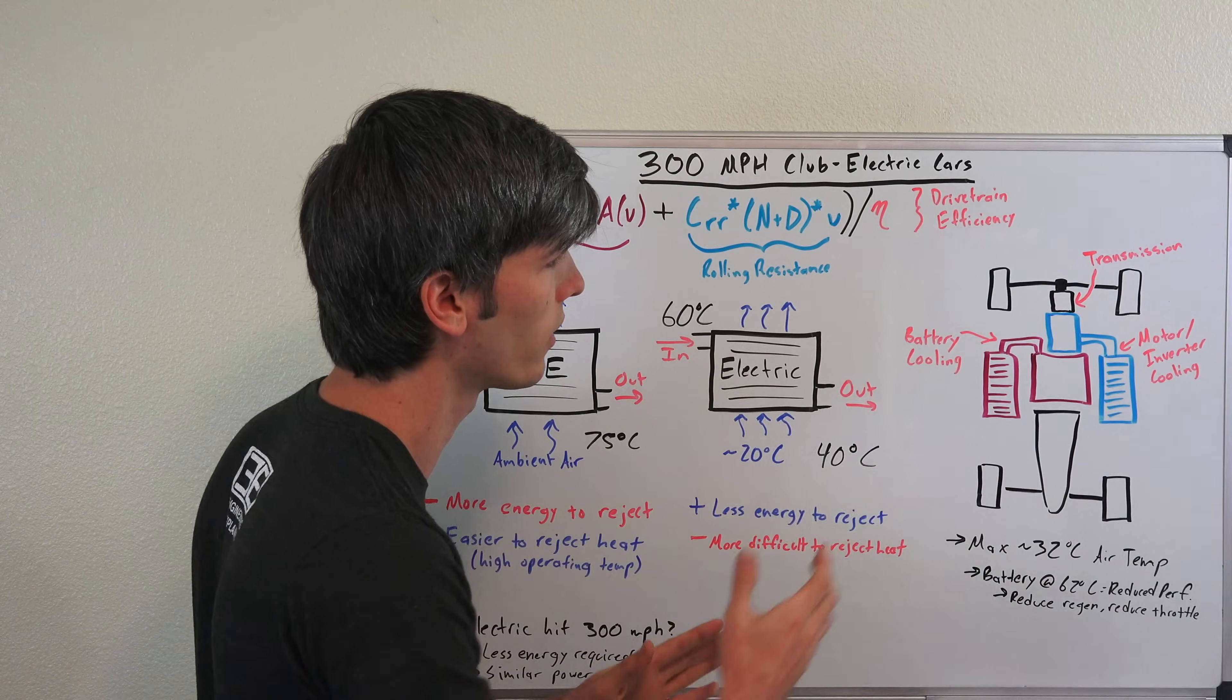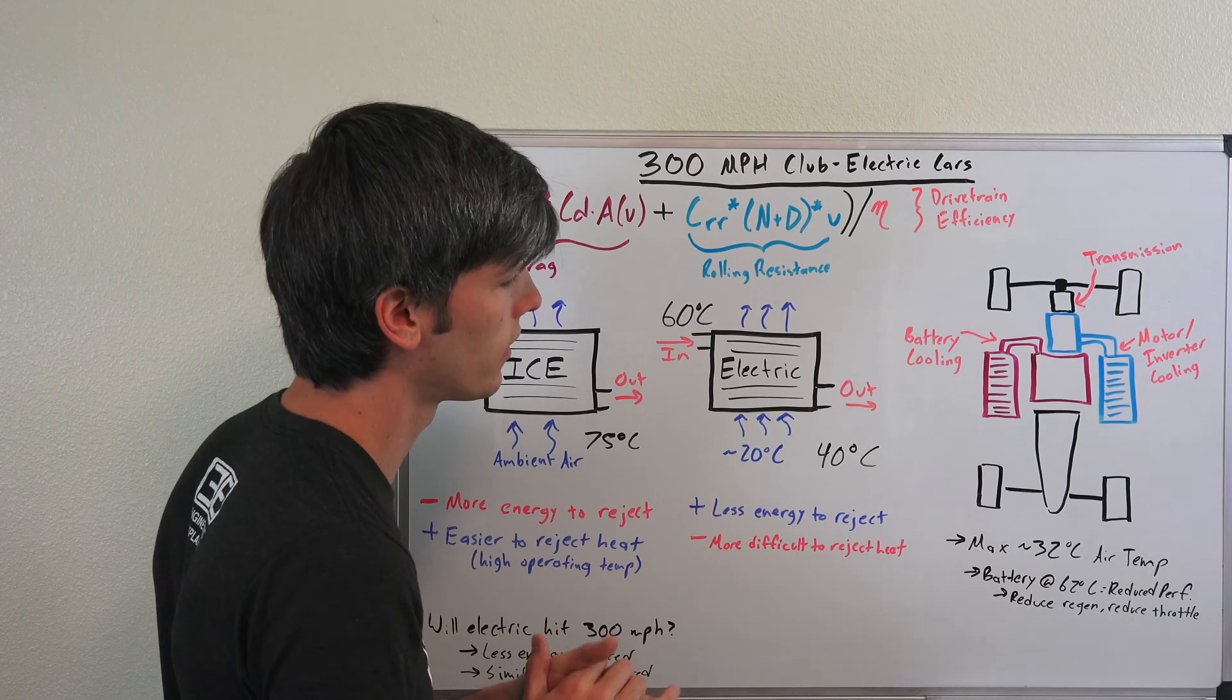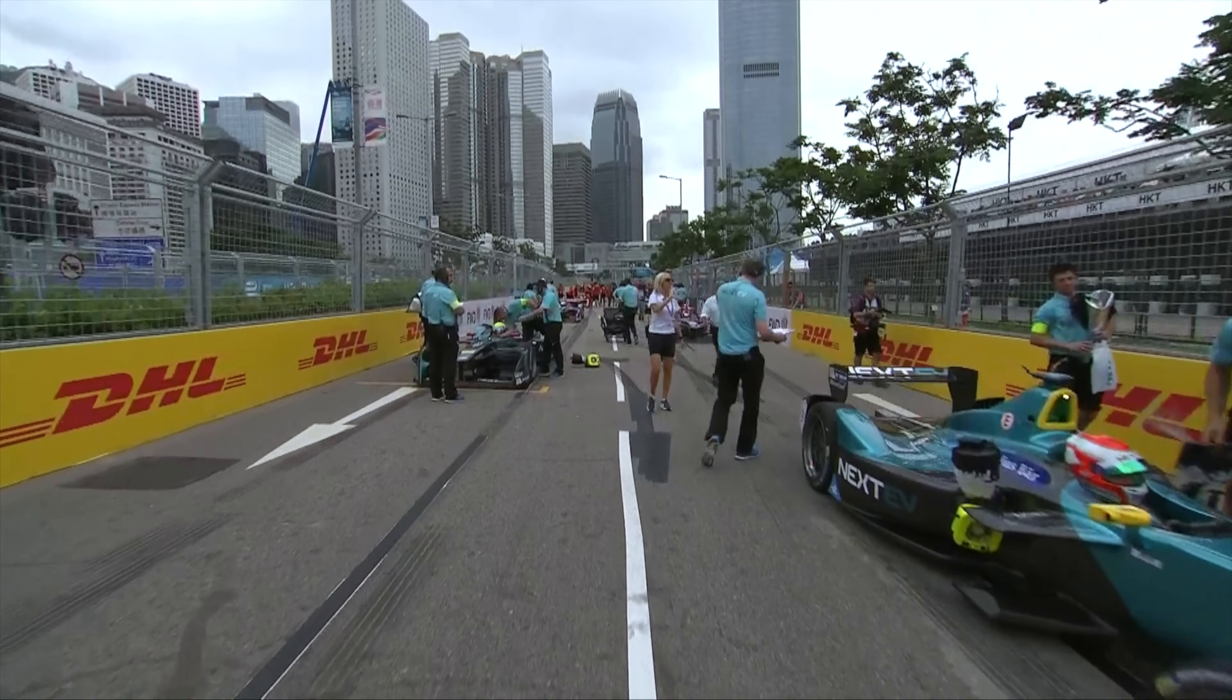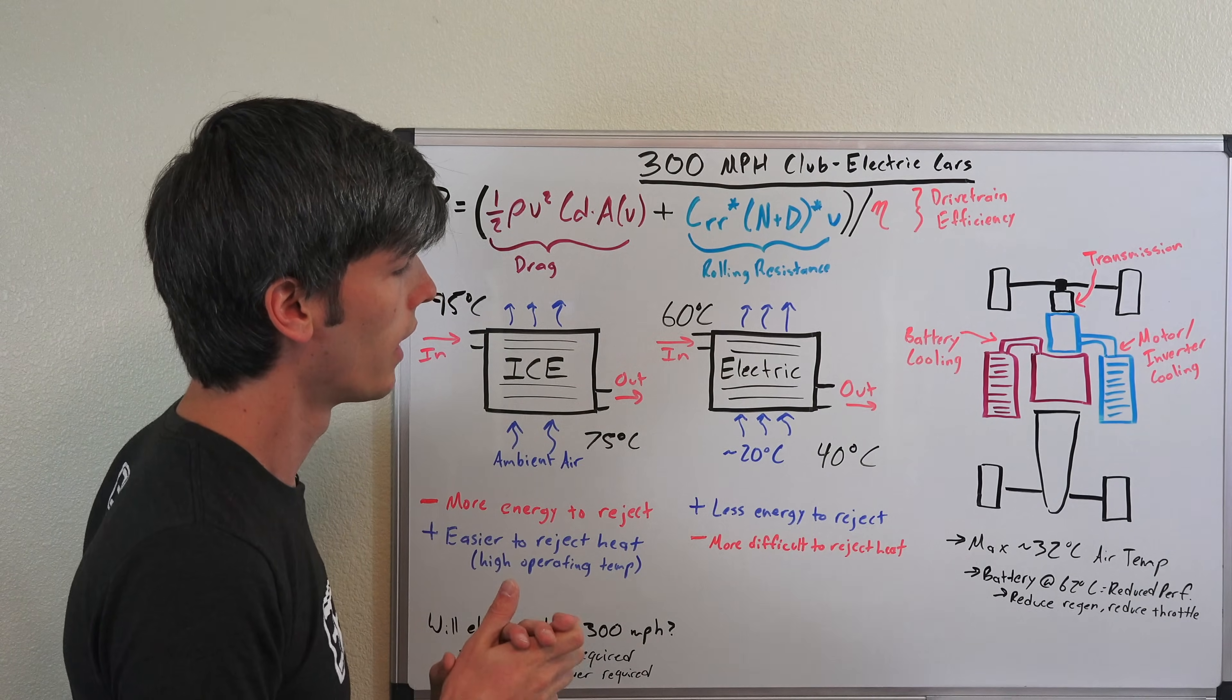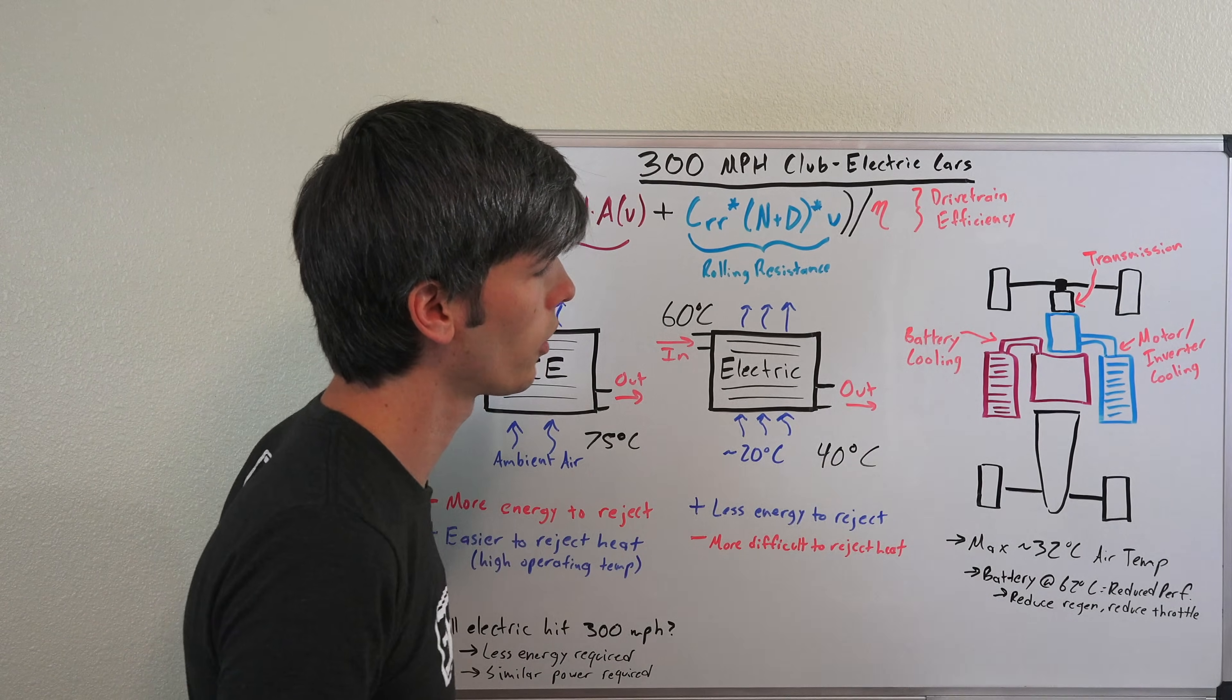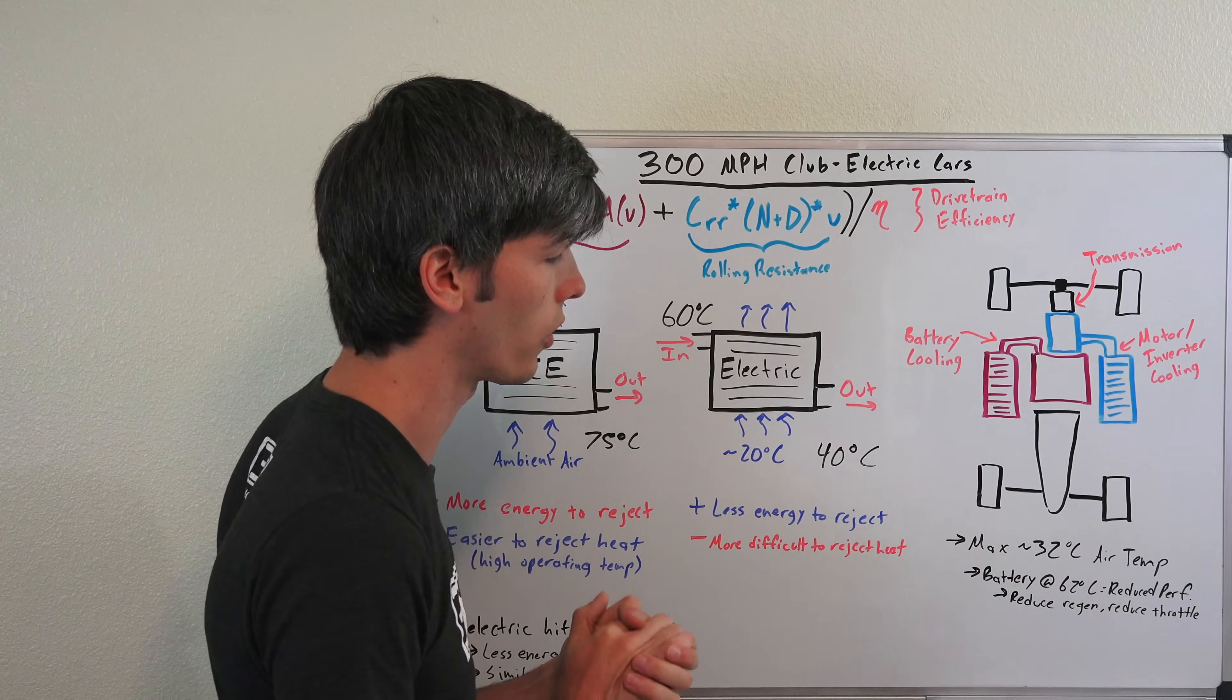They do of course have to cool the battery and the motor and inverter. And one of the challenges they run into is that this battery cannot exceed 62 degrees Celsius, or they start to get reduced performance of their vehicle. And so there are races in which Formula E goes of course all around the world, where their air temperatures are as high as 32 degrees Celsius. So remember this temperature differential is getting smaller and smaller, and so what that means is this cooling circuit is less and less effective at rejecting that heat.